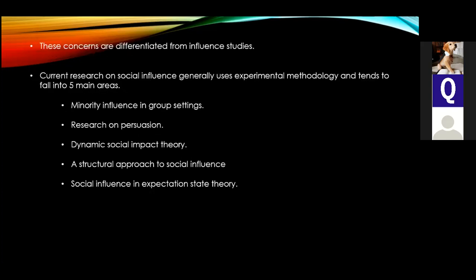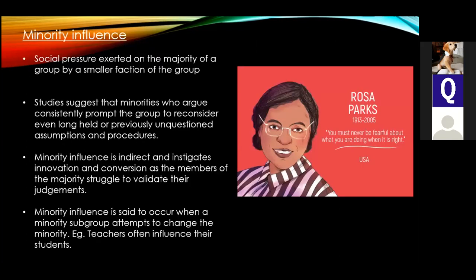Current research on social influence generally uses experimental methodology and tends to fall into five main categories: minority influence in group settings, research on persuasion, dynamic social impact theory, a structural approach to social influence, and social influence and expectation states theory.